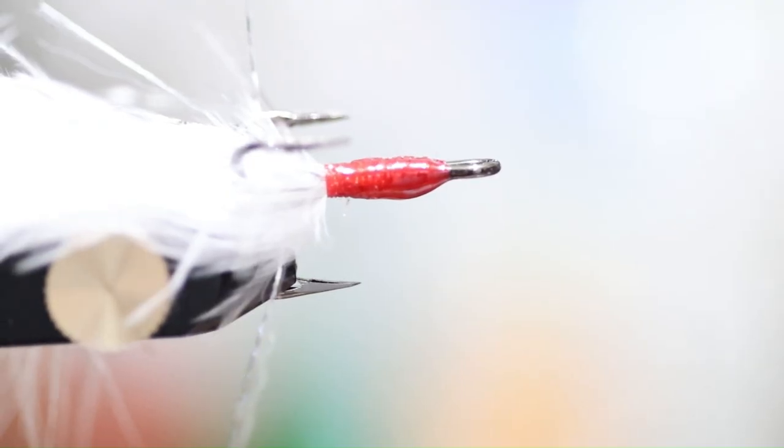Now we're going to apply the Sally Hansen Hard as Nails onto the thread there and get her all sealed up and ready to go. Like I said, thanks for watching another episode of Fishing Glass. If you like the videos, please subscribe.